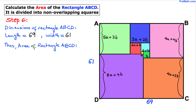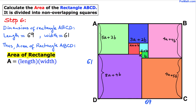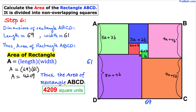Now we are going to calculate the area of rectangle ABCD. The area of a rectangle formula is: Area equals length times width. So Area equals 69 times 61, which gives us 4209. The area of rectangle ABCD is 4209 square units.